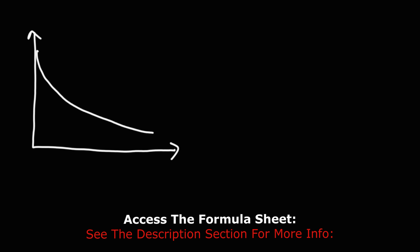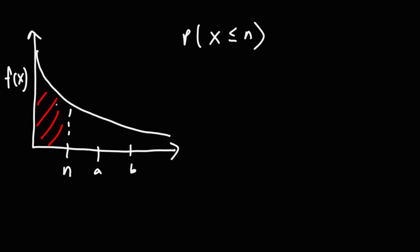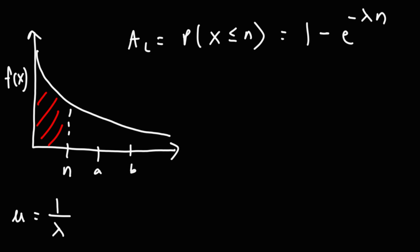Now the next distribution we're going to talk about is the exponential distribution. We have f of x on the y-axis, with points a and b. If we want to find the probability that x is less than or equal to n — basically the area of the shaded region on the left — this is equal to 1 minus e raised to the negative lambda times n, where lambda is the rate parameter.